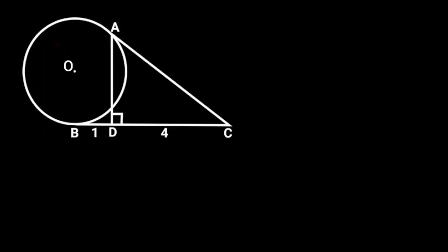In this figure, AC and BC are tangents to the circle. If BD is equal to 1 and CD is equal to 4, find the area of the circle.